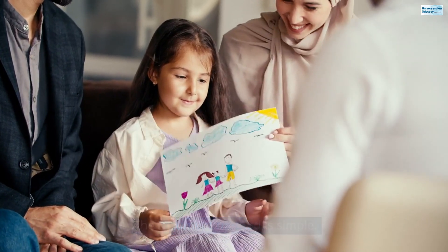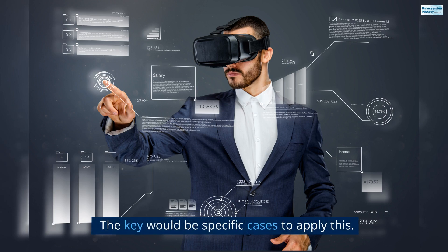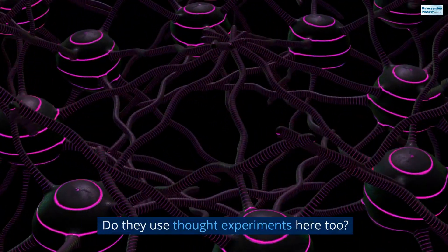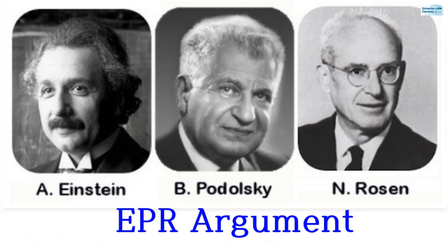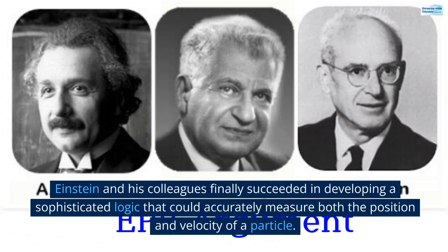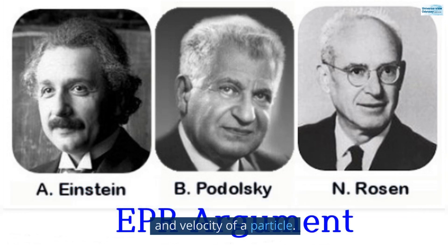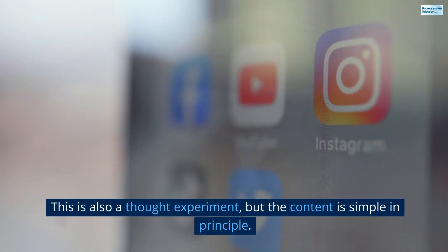The argument method is simple. The key would be specific cases to apply this. Do they use thought experiments here too? Yes. Einstein and his colleagues finally succeeded in developing a sophisticated logic that could accurately measure both the position and velocity of a particle. This is also a thought experiment, but the content is simple in principle.